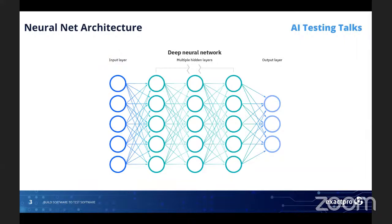It was created maybe 60 or 70 years ago, and its purpose was to recognize digits — like pictures with some numbers. From that time, the complexity of neural nets increased significantly. Now it's actually billions of neurons distributed across thousands of layers, with some tricky connections. If you Google a general schema of some complex neural net like Google's TensorFlow, you will see something which reminds us of a spaceship.